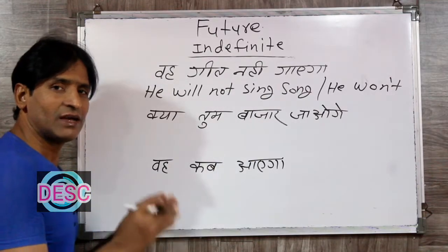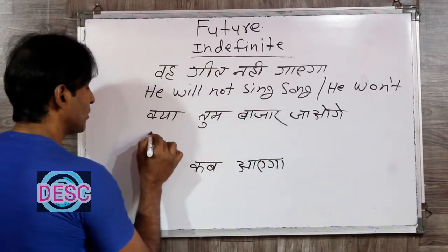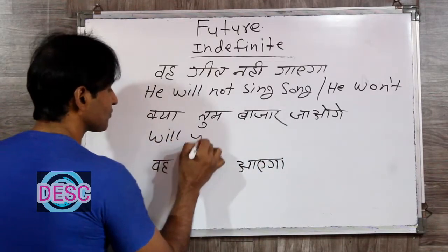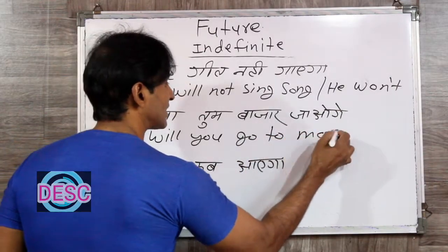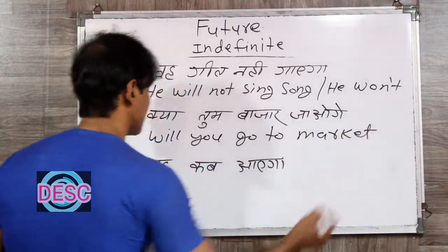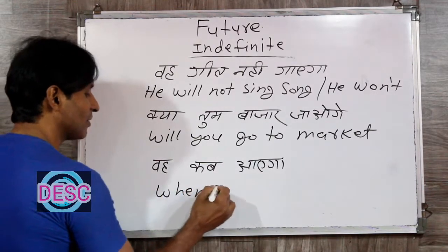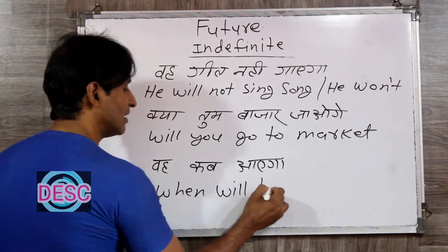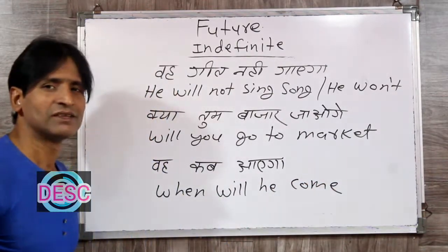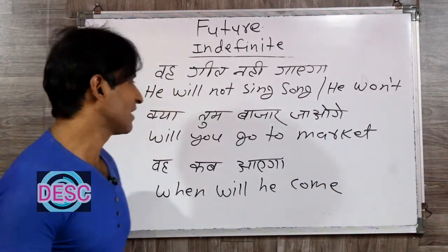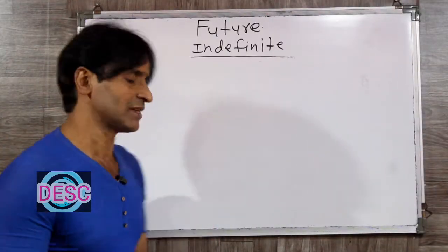'Kya tum bazaar jaoge?' — Will you go to market? 'Woh kab aayega?' — When will he come? Simple, no big deal. Okay friends, now let's make sentences using short forms.